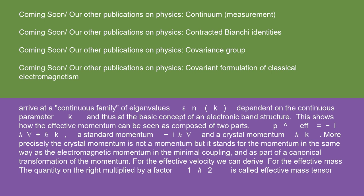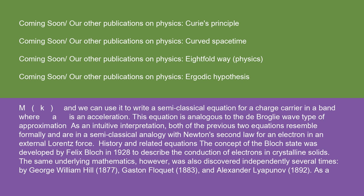For the effective velocity, we can derive... For the effective mass, the quantity on the right multiplied by a factor 1/2 is called effective mass tensor m*(k), and we can use it to write a semi-classical equation for a charge carrier in a band where it is an acceleration. This equation is analogous to the de Broglie wave type of approximation as an intuitive interpretation. Both of the previous two equations resemble formally and are in a semi-classical analogy with Newton's second law for an electron in an external Lorentz force.